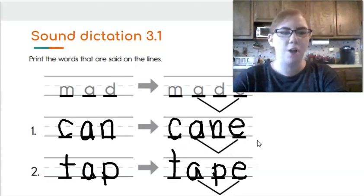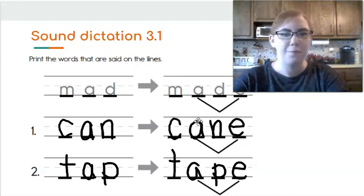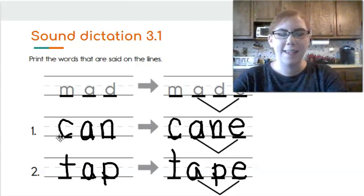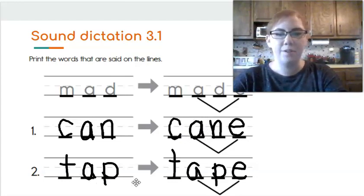This E is also called a magic E because it changes the sound of the vowel before it. The E becomes silent. Did you notice that we don't say it? Cane. The magic E is silent but it changes the sound of the vowel before it. So this says can and this says cane. Now this is saying A instead of A. Tap to tape. That magic E changes this vowel to A.